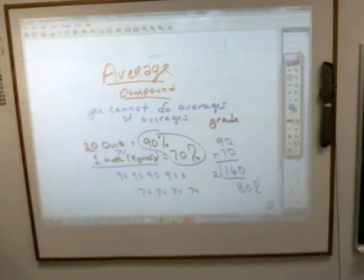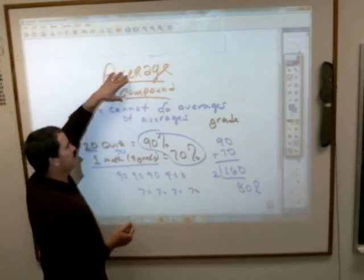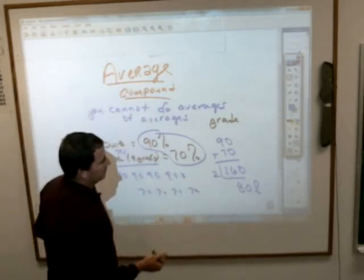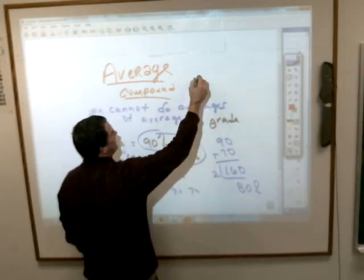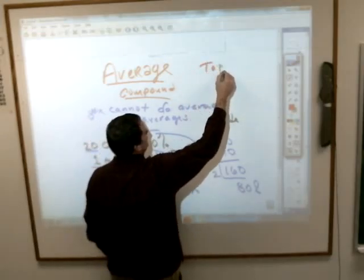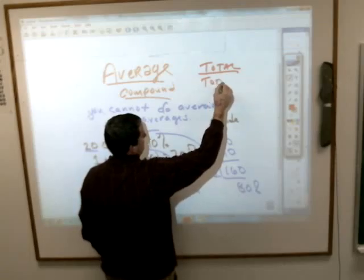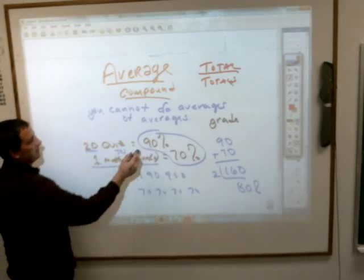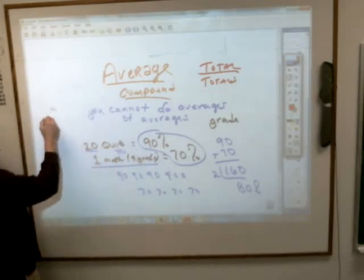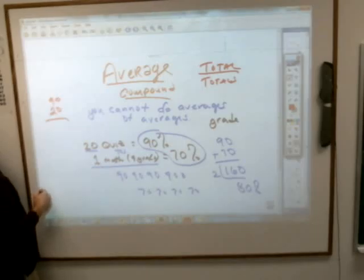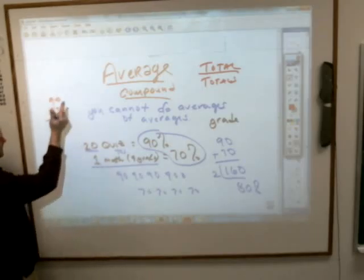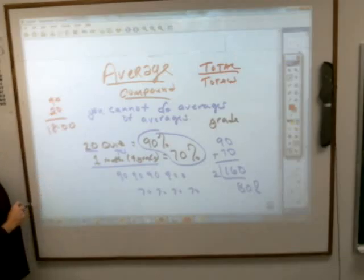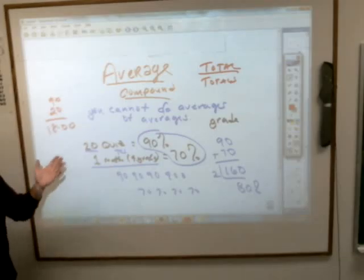Which means you've got a whole lot more on the 90 side than you do on the 70 side. So in order to actually find out the compound average — that's what they call it when you've got more than one — it has to be totals divided by totals. If you have 20 nineties, that is 1,800 total percent points. You just multiply it out to find out how much total you have.